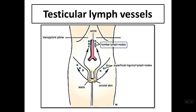The lymphatics passing through the spermatic cord drain the testis and epididymis. They travel up through the inguinal canal and spermatic cord to the inside of the abdomen, draining to the lumbar lymph nodes, also called para-aortic lymph nodes, at the level of the lumbar vertebrae. This is because embryologically the testis originates from the lumbar region and descends to its final destination in the scrotum. The lymph from the scrotum, by contrast, drains to the superficial inguinal lymph nodes.